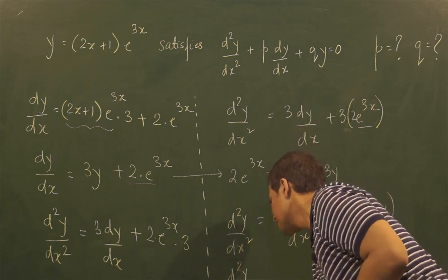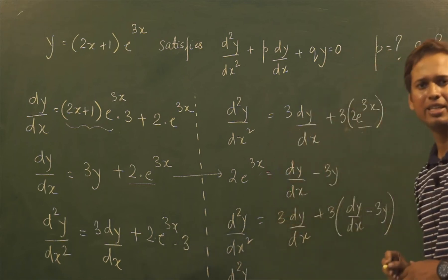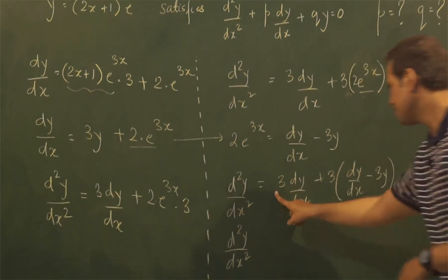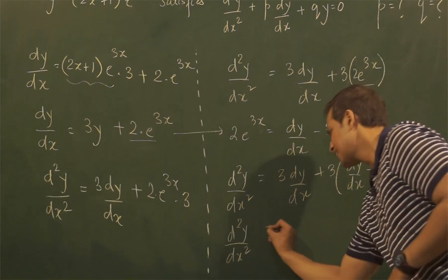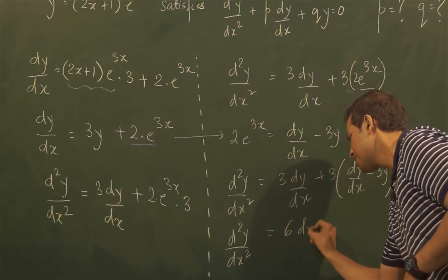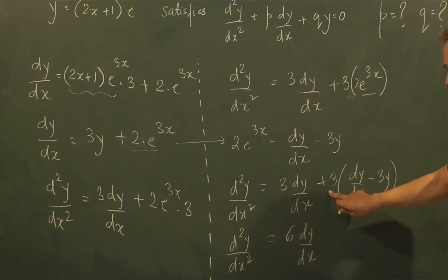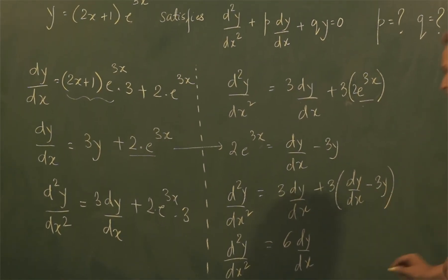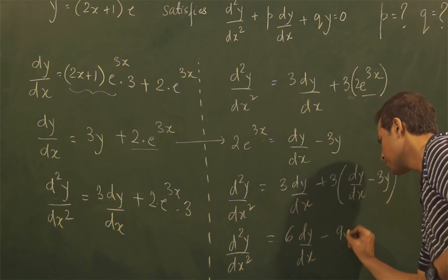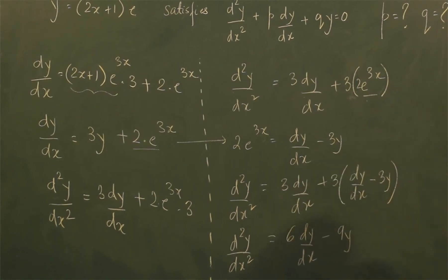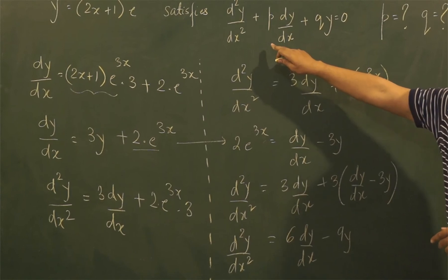d²y/dx² can be written as 3 dy/dx and 3 dy/dx can be combined to make 6 dy/dx, and 3 and minus 3y can be made as minus 9y.